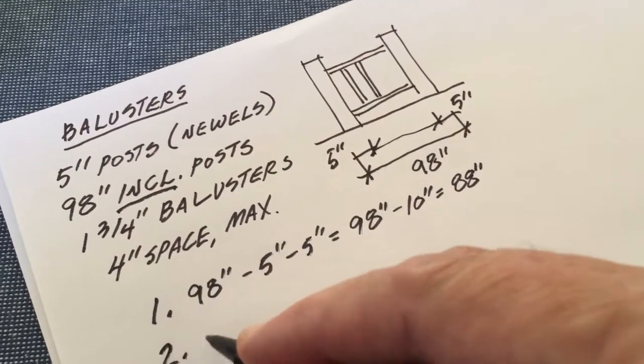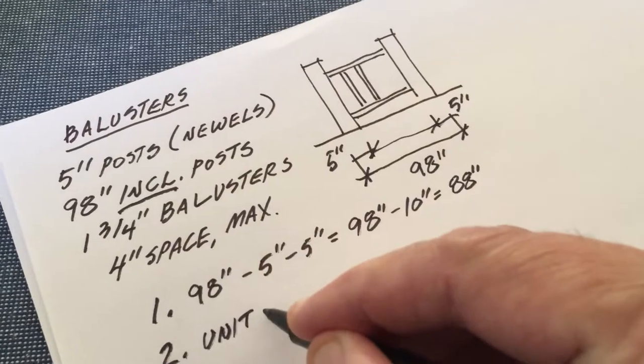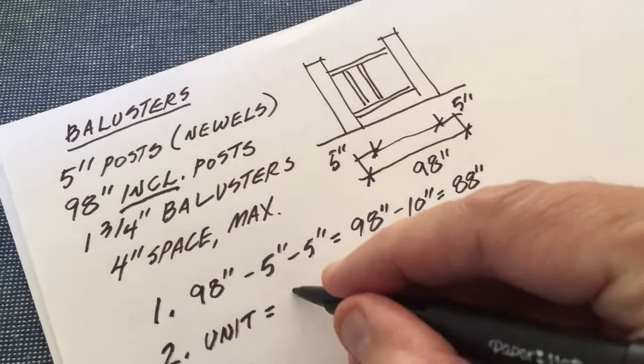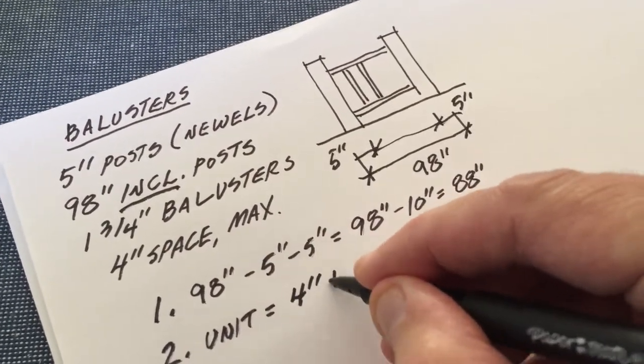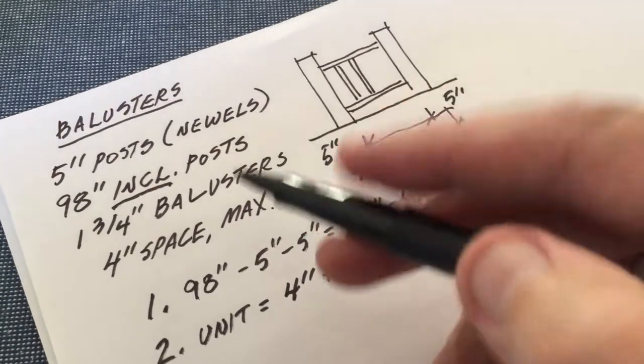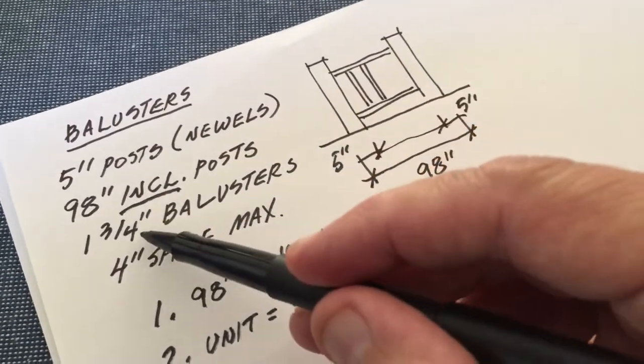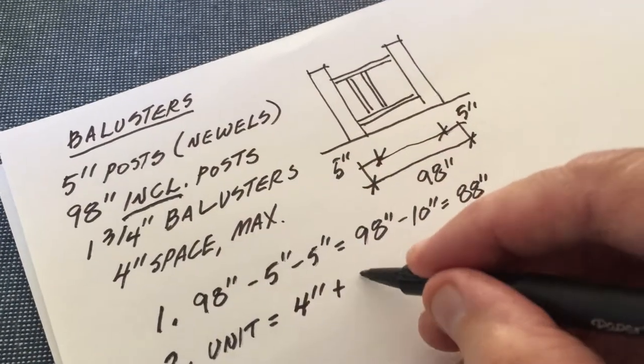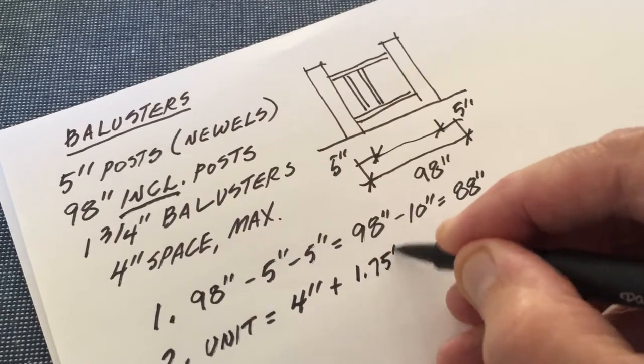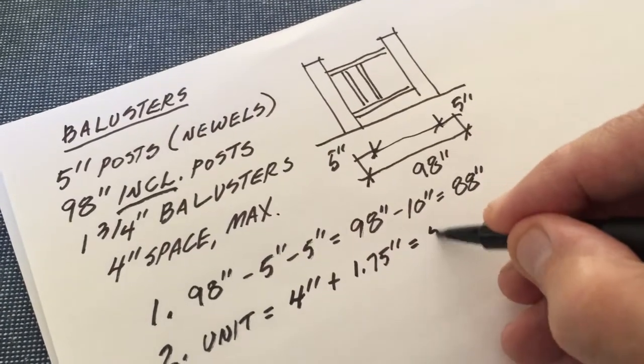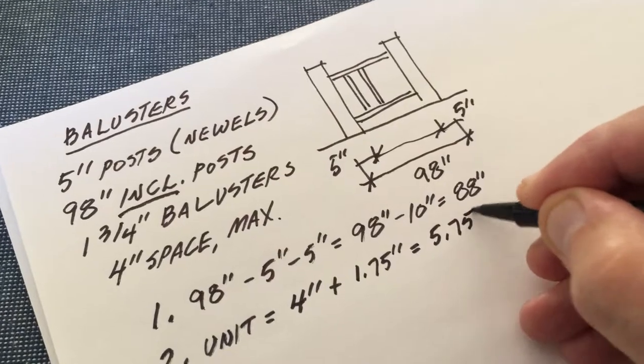The second thing I need to look up is my unit. My unit equals my space plus the width of the balusters. One and three quarters is 1.75 inches, so my unit is 5.75 inches.